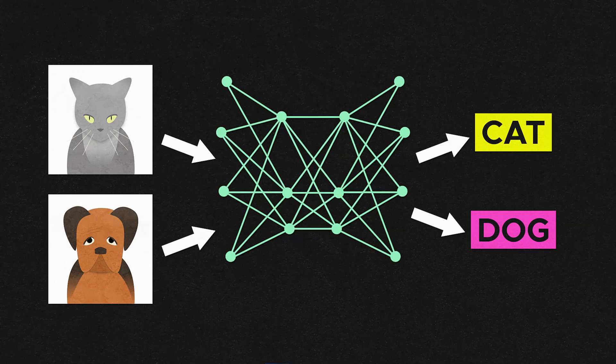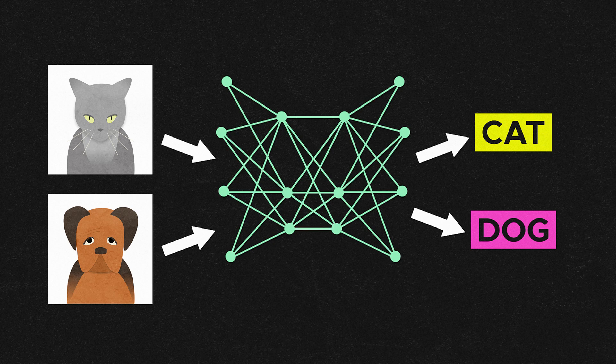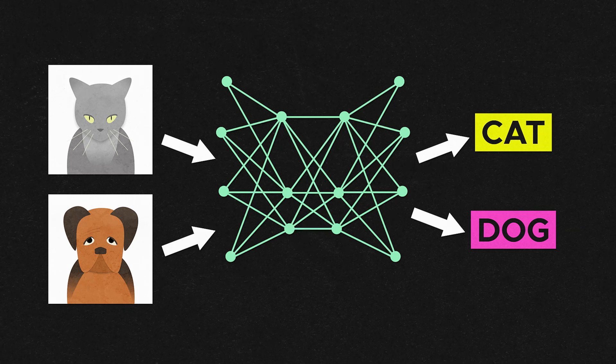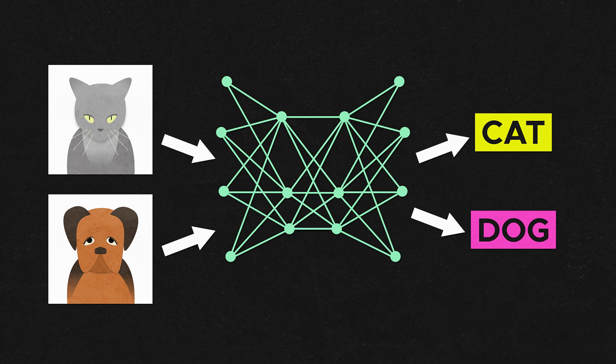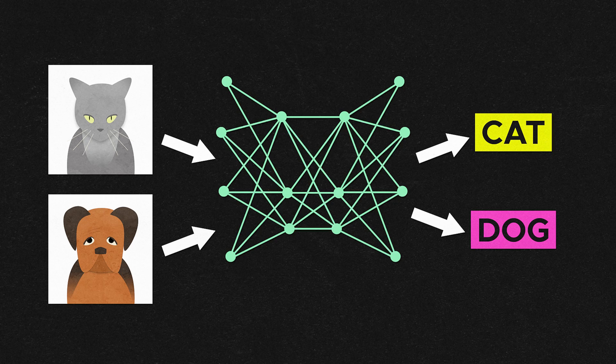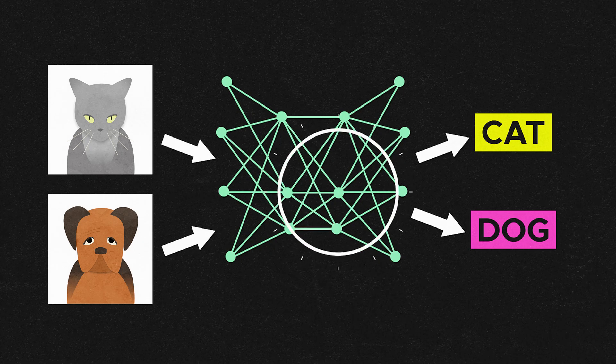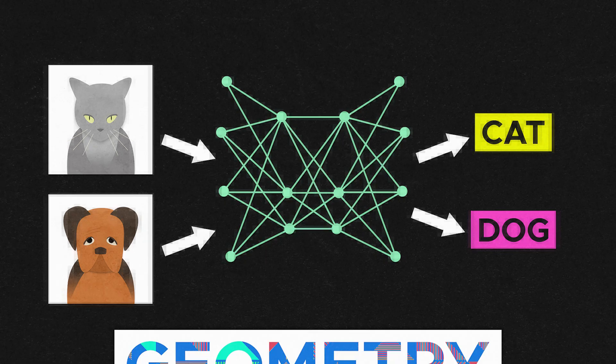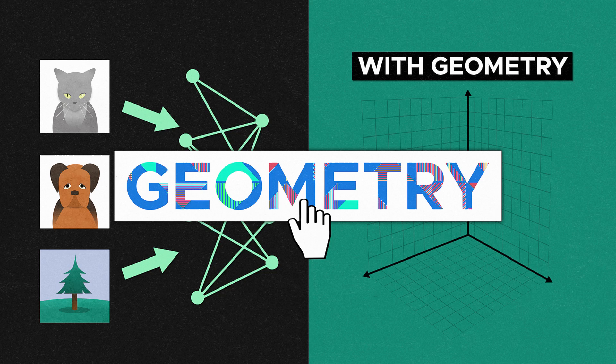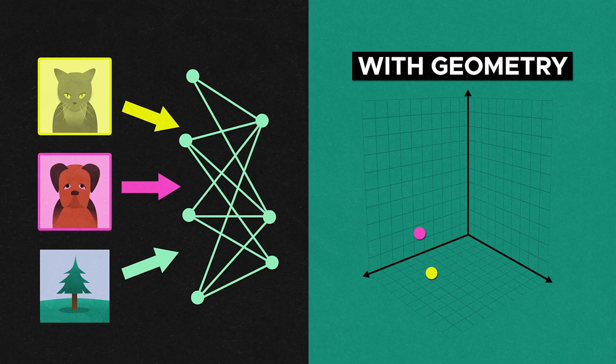One approach to understanding how this works is to look at the model's internal representations of data. But these internal representations lack structure that users can understand. It's just points in a very high-dimensional abstract geometric space. That's why applying concepts from geometry can help us understand how the model generates responses.